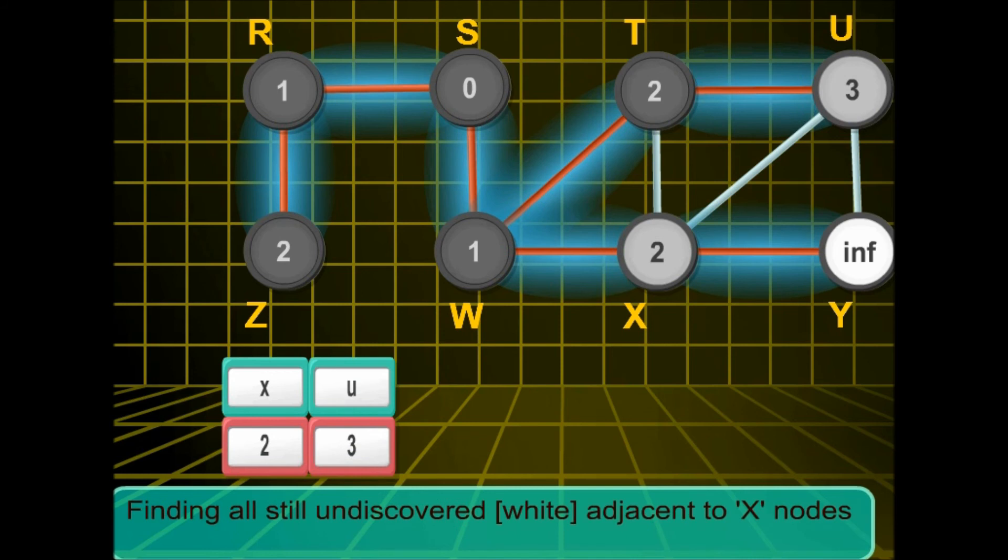Next to be dequeued is x. We find that y is adjacent to x, so y will be enqueued. x is dequeued and marked black. Notice the distance of y will be 3.